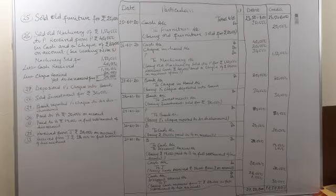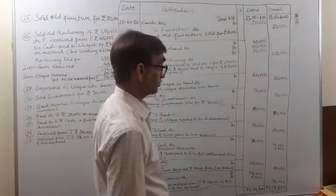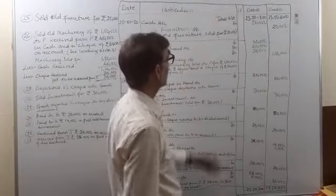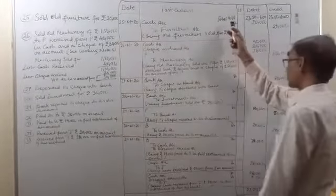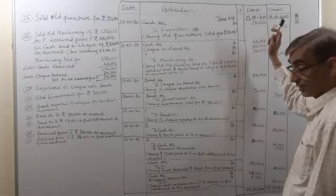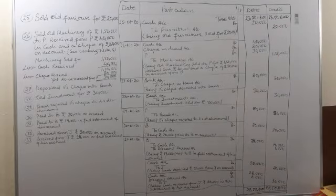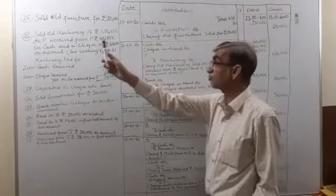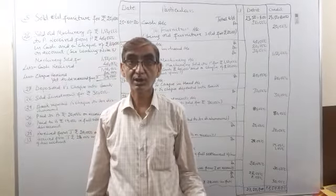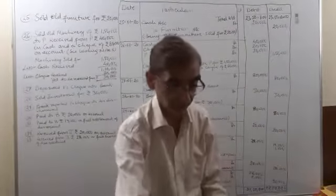Continuing the topic of the journal, the total carried down from the previous page is brought forward to this page, which is rupees 23,50,800. Yesterday we were dealing with transactions related to sales of goods.